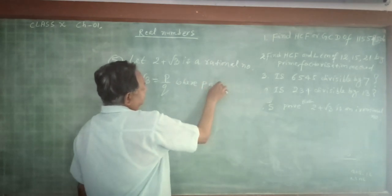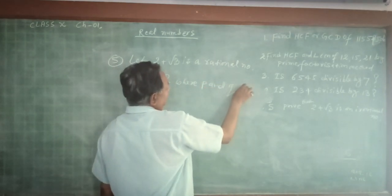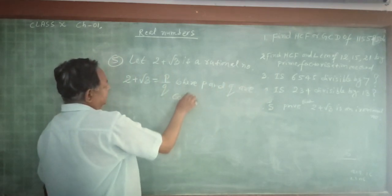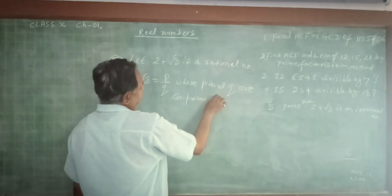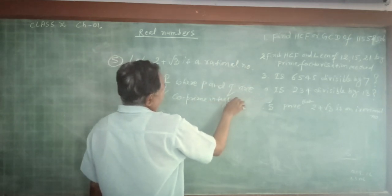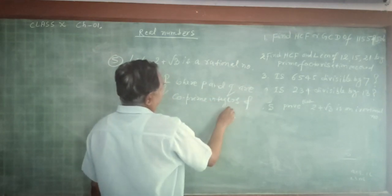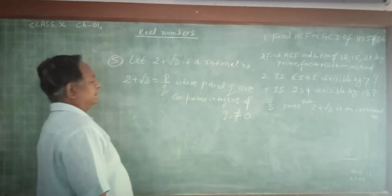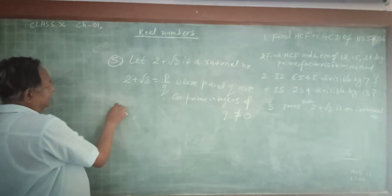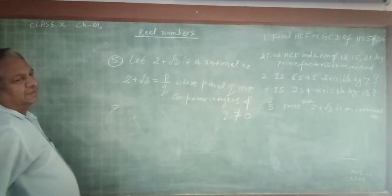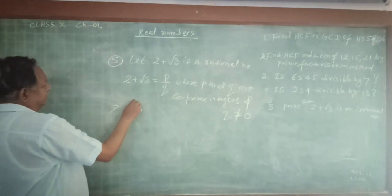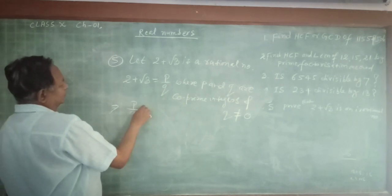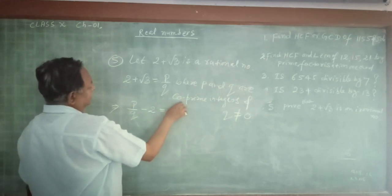Where P and Q are co-prime integers and Q is not equal to 0. This can be written as: P by Q minus 2 is equal to root 3.